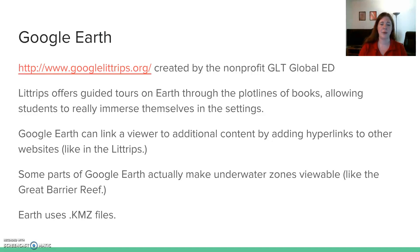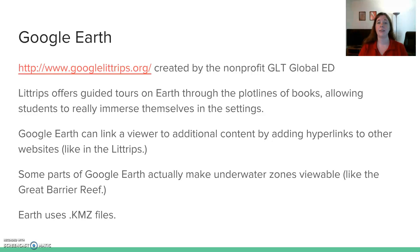Google Earth can link viewers to additional content through hyperlinks to other websites. With the Kite Runner LitTrip, for example, they link to discussion questions, examples of regional humor, and a newsletter. There are all kinds of links you can add to a Google Earth tour. Some parts of Google Earth also make underwater zones viewable, like the Great Barrier Reef. Notably, Google Earth uses .KMZ files.